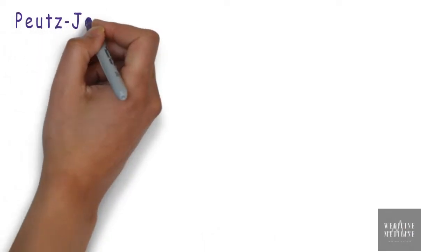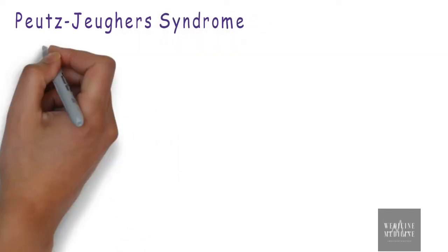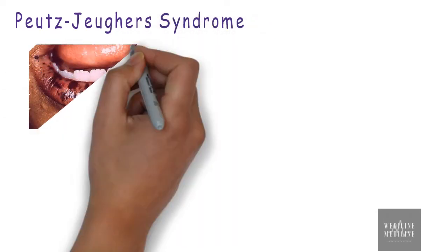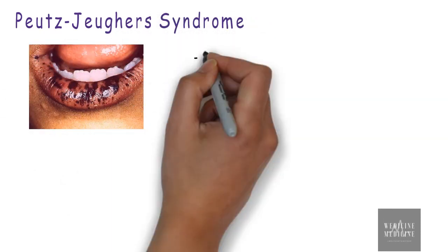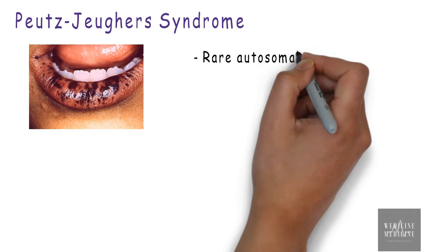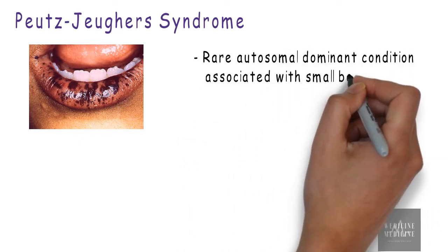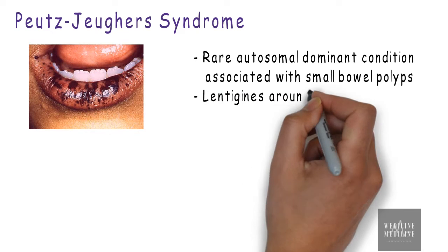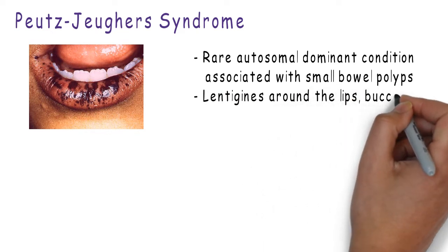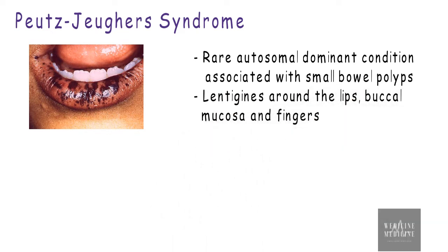Peutz-Jeghers syndrome often presents with a hyperpigmentation disorder. It is a rare autosomal dominant condition associated with small bowel polyps, and lentigens in this condition are seen around the lips, buccal mucosa, and fingers.